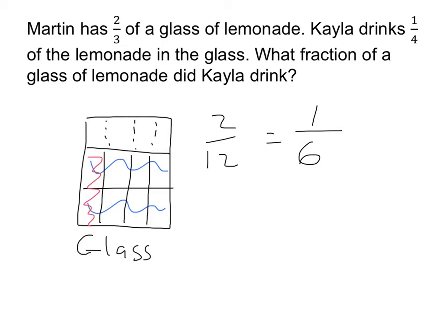We can tell that from the picture. If we look at the picture, we see that we did something with a quarter of this two-thirds. The picture helps us justify that we could have solved this problem by simply taking one-fourth times two-thirds.